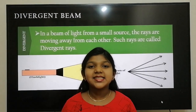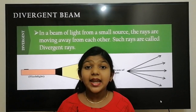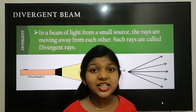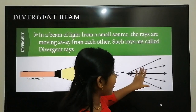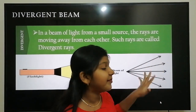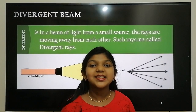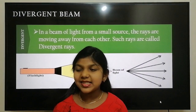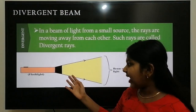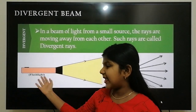Next is divergent beam of light. In a beam of light from a small source, the rays are moving away from each other. Such rays are known as divergent rays. For example, the light coming out from a flashlight.